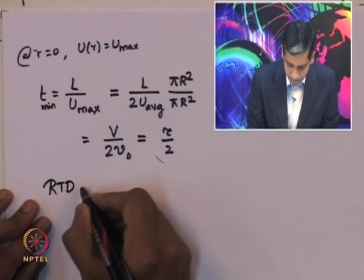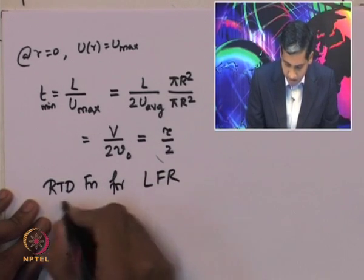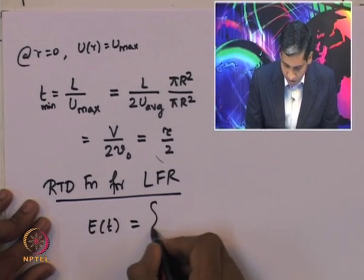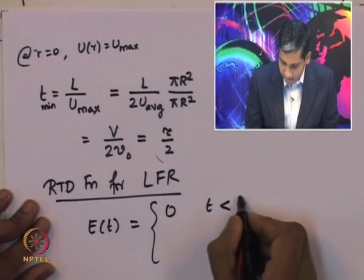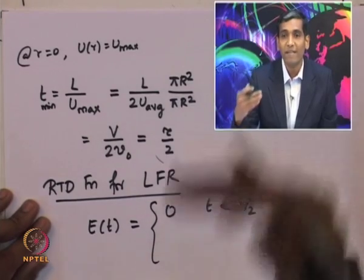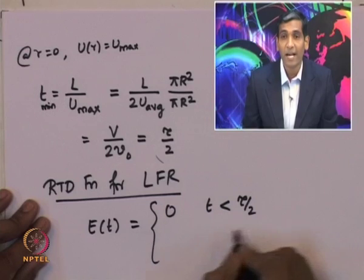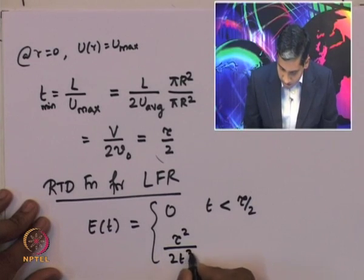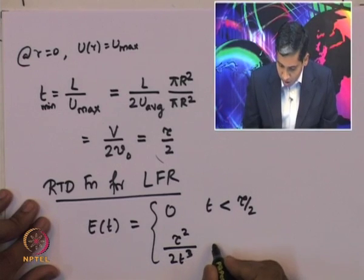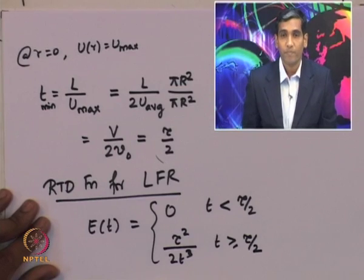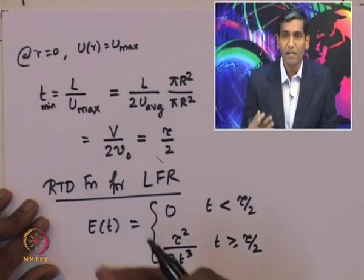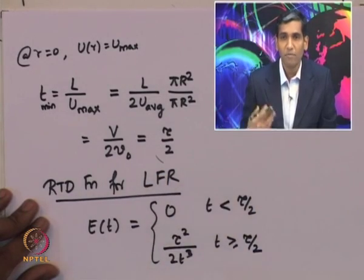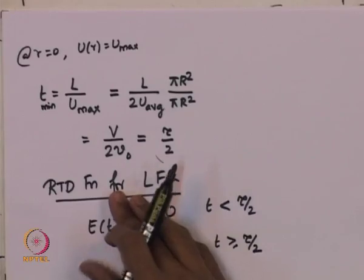The RTD function for the laminar flow reactor is: E(t) = 0 for t < τ/2, meaning no fluid leaves before τ/2; and E(t) = τ²/(2t³) for t ≥ τ/2. This is a clear example of how to find the RTD function for a real reactor, and such a method can be employed for any activity reactor where dispersion is not present.